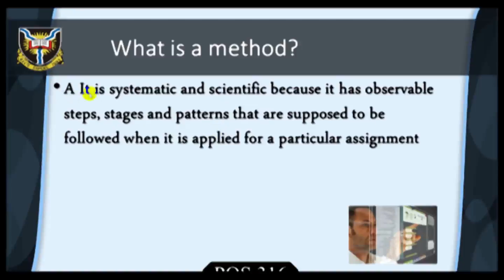We may need to go a step further by saying that a method is systematic and scientific, because it has observable steps, stages and patterns that are supposed to be followed when it is applied for a particular assignment.